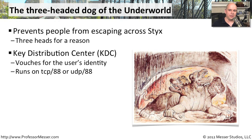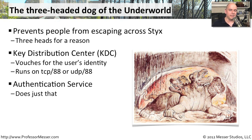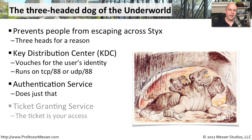One of those heads is the Key Distribution Center, the KDC. This is what is going to make sure that you are who you say you are, you're providing the right login credentials, and you'll usually see this running on TCP port 88 or UDP port 88. One of the other heads is called the Authentication Service — the service that actually does the authentication onto the network. The third head is called the Ticket Granting Service. In Kerberos, there are a lot of tickets that go back and forth, and it's this ticket granting service that ultimately provides you with the ability to go to any resource on the network and gain access to the ones that you need.